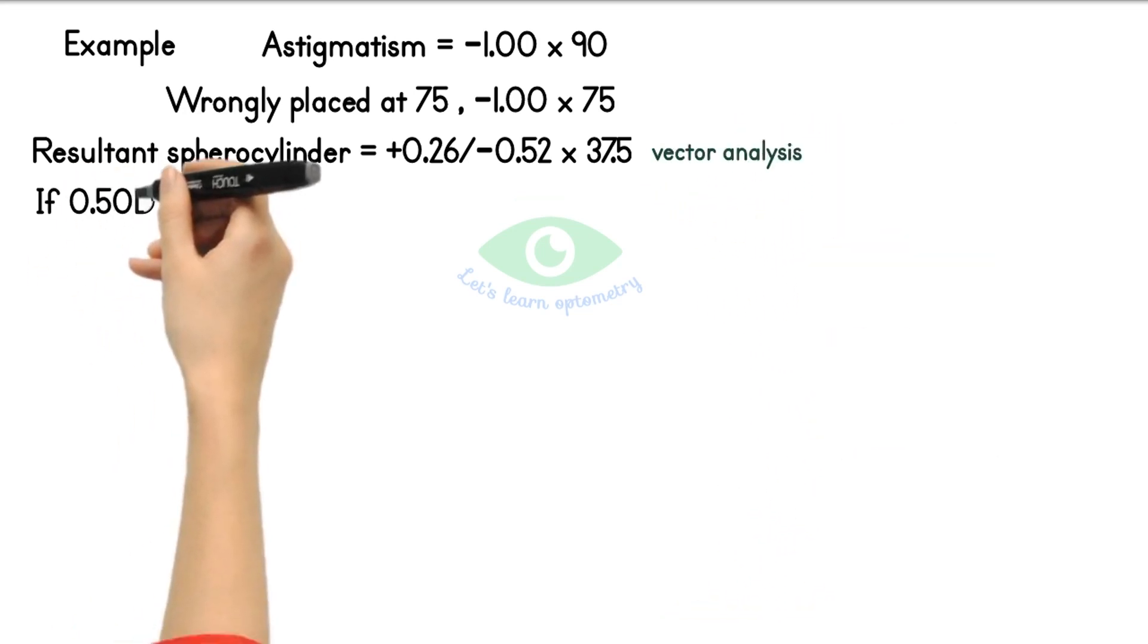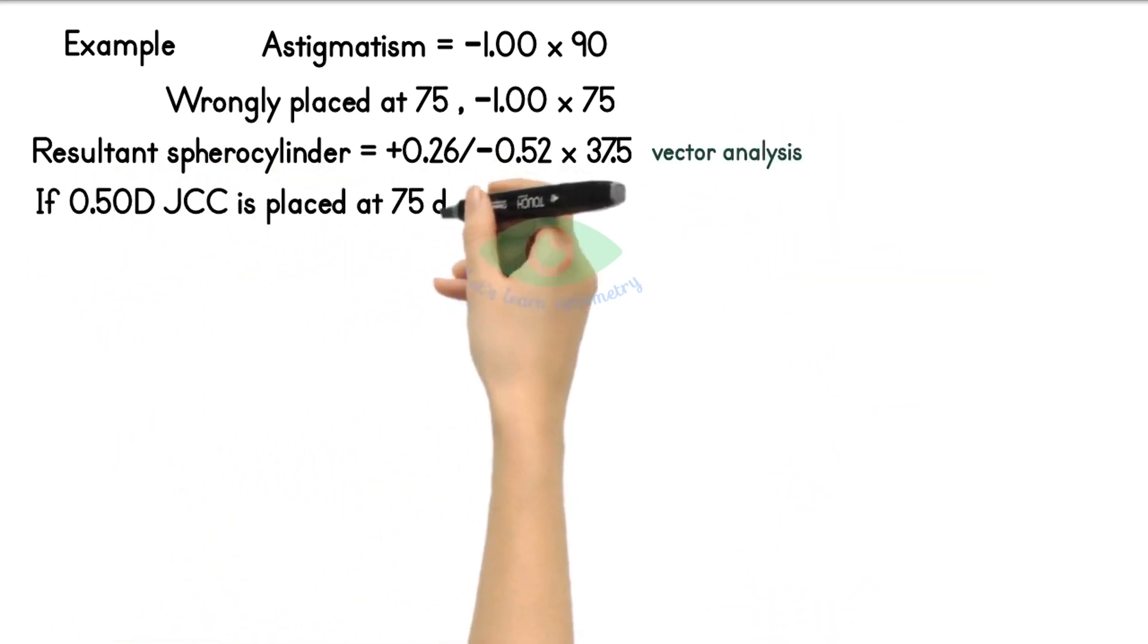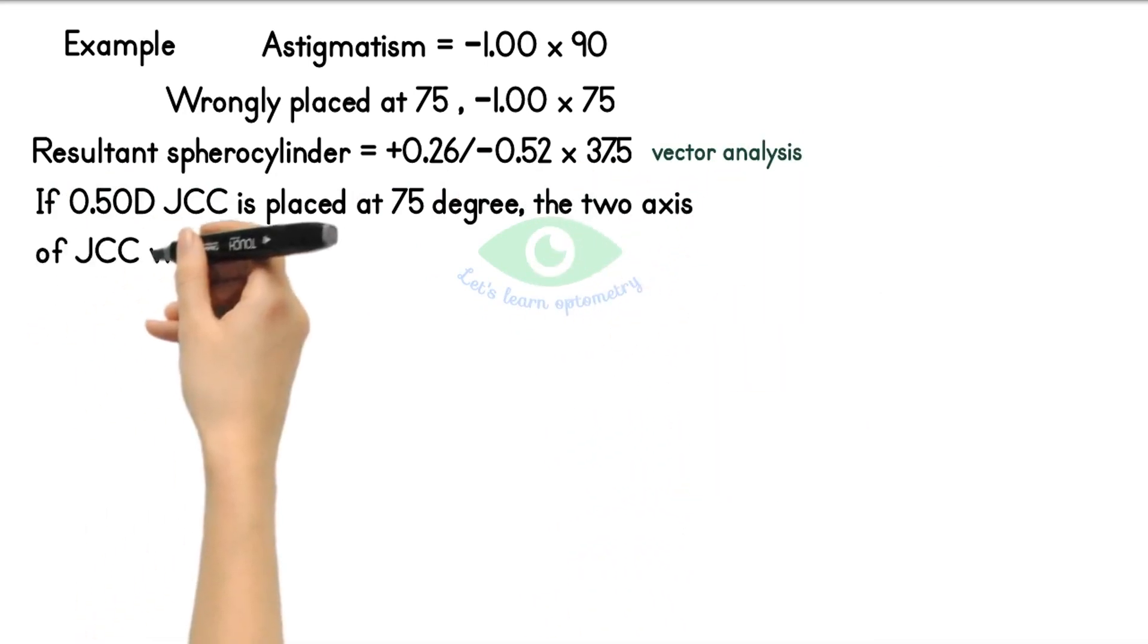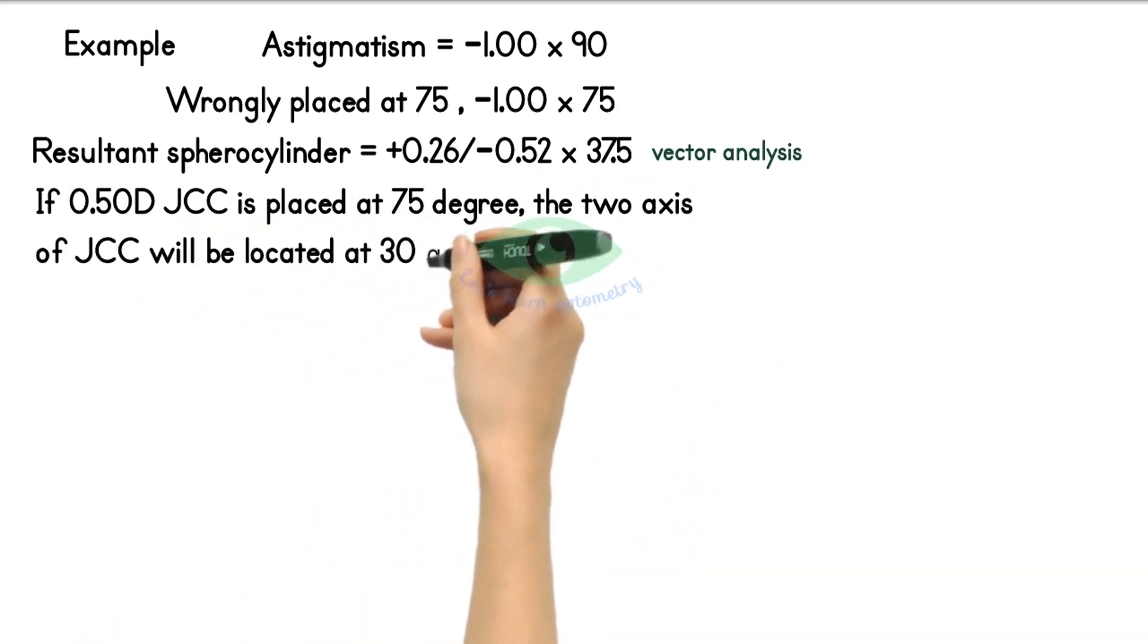If a 0.5 diopter JCC is placed at 75 degrees, the two axes of the JCC will be located at 30 and 120 degrees. We know that during axis refinement we place the handle parallel to the correcting cylindrical lens axis.